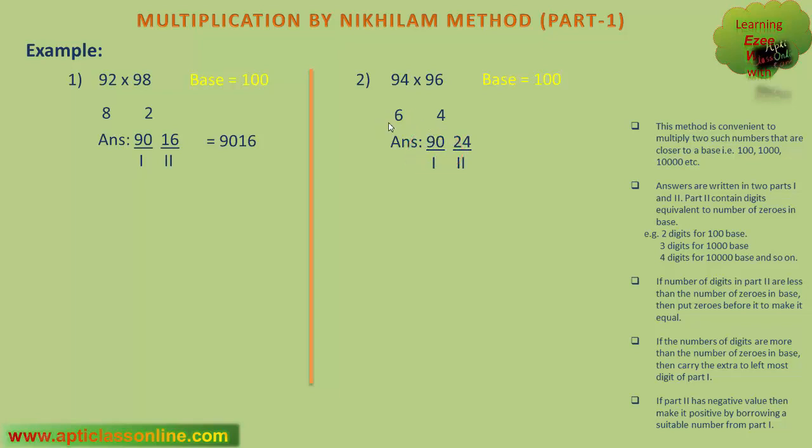The second part will be the multiplication of these two, 6 multiplied by 4, that is 24. This is the second part. Now you have to check whether the second part contains two digits? Yes, it contains. Thus, 9024 is the final answer.